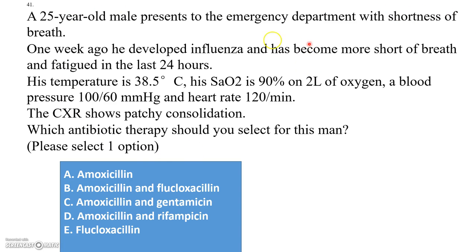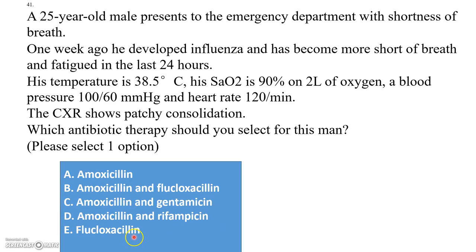Here is an example question: a 25-year-old male presents to the emergency department with shortness of breath. One week ago he developed influenza and has become more short of breath and fatigued in the last 24 hours. Temperature is 38.5°C, oxygen saturation is 90% on two liters, blood pressure 160, heart rate 120 per minute, and chest X-ray shows patchy consolidation. Which antibiotic therapy should you select? Options are: A) amoxicillin, B) amoxicillin and flucloxacillin, C) amoxicillin and gentamicin, D) amoxicillin and rifampicin, E) flucloxacillin.